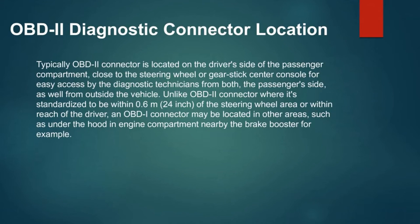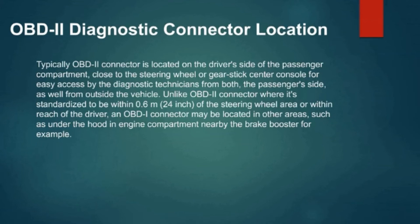OBD Diagnostic Connector Location. Typically, the OBD2 connector is located on the driver's side of the passenger compartment, close to the steering wheel or gear stick center console, for easy access by diagnostic technicians from both the passenger side and from outside the vehicle. Unlike OBD2, which is standardized to be within 0.6 meters (24 inches) of the steering wheel area, an OBD1 connector may be located in other areas, such as under the hood in the engine compartment, nearby the brake booster for example.